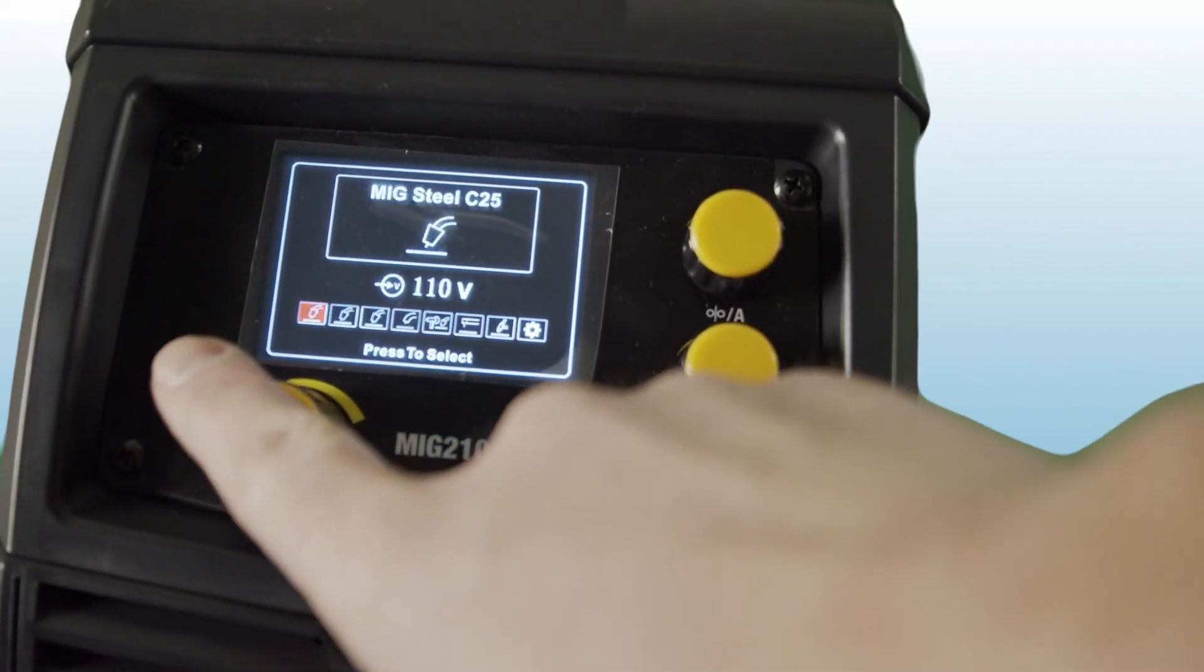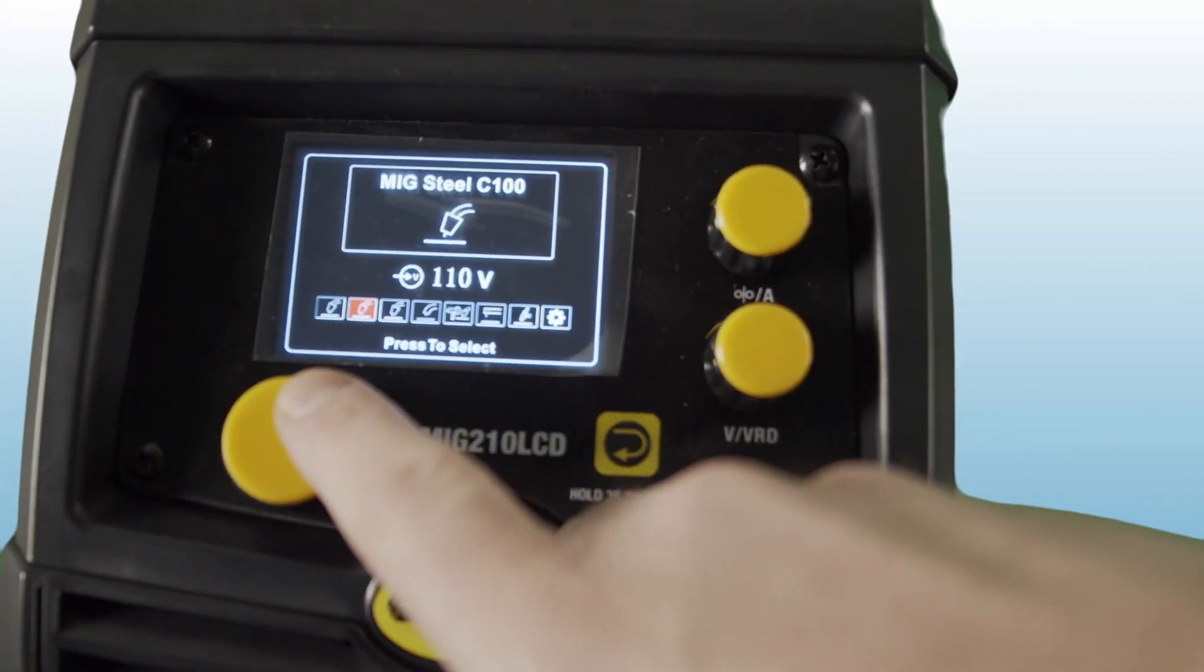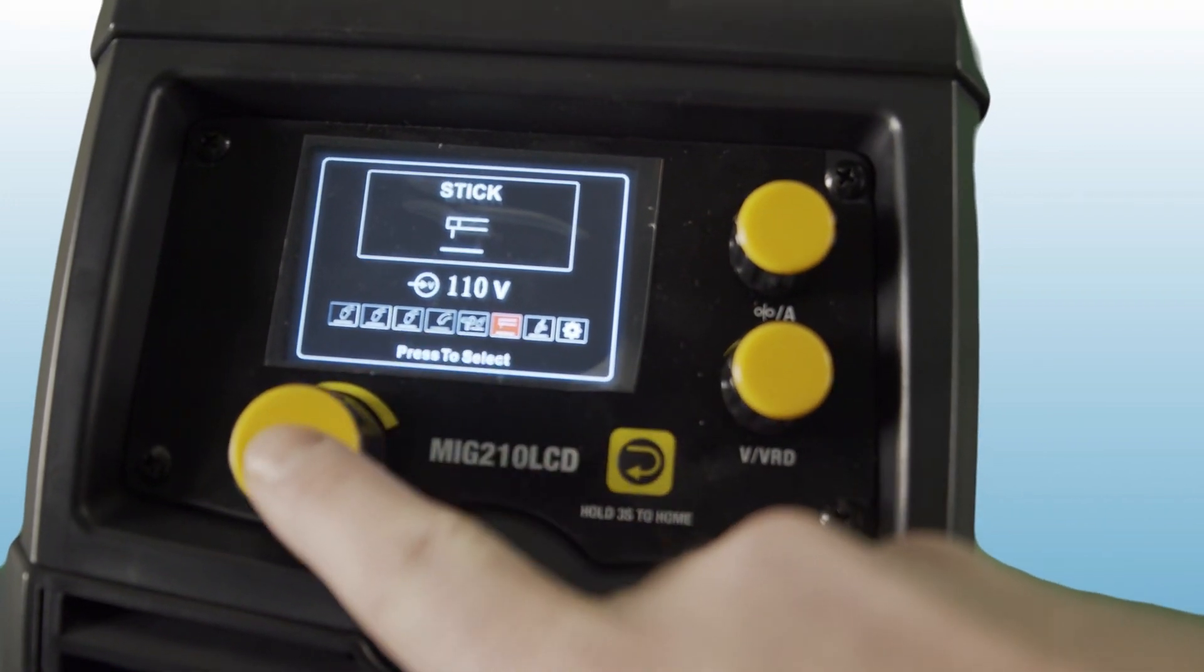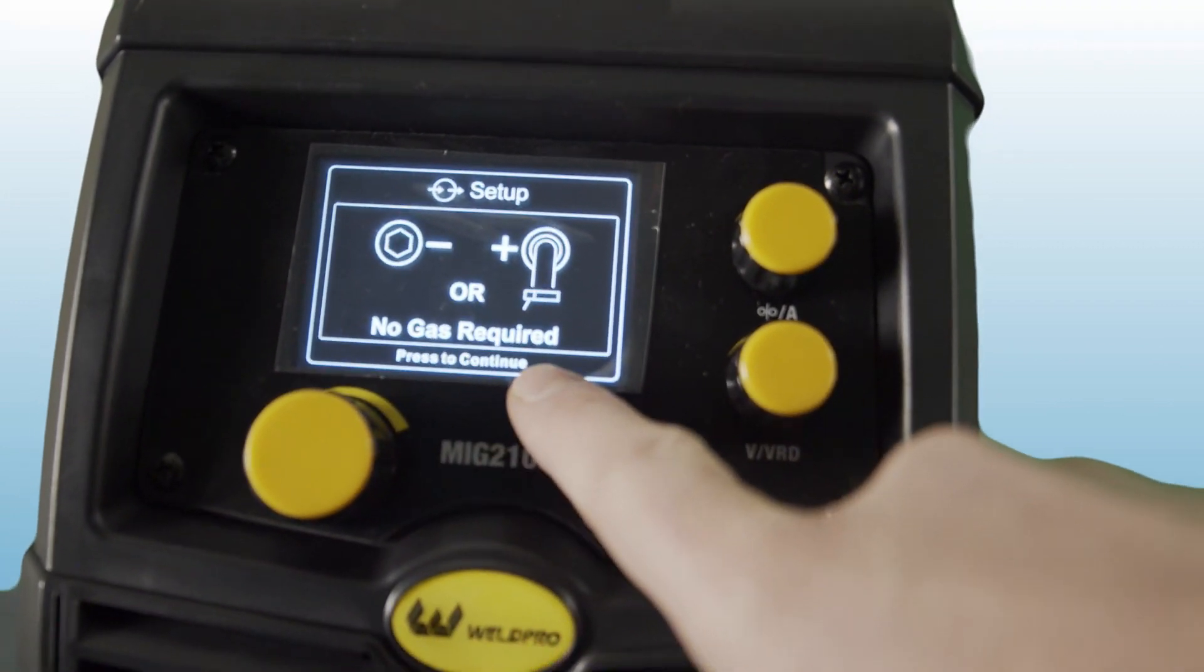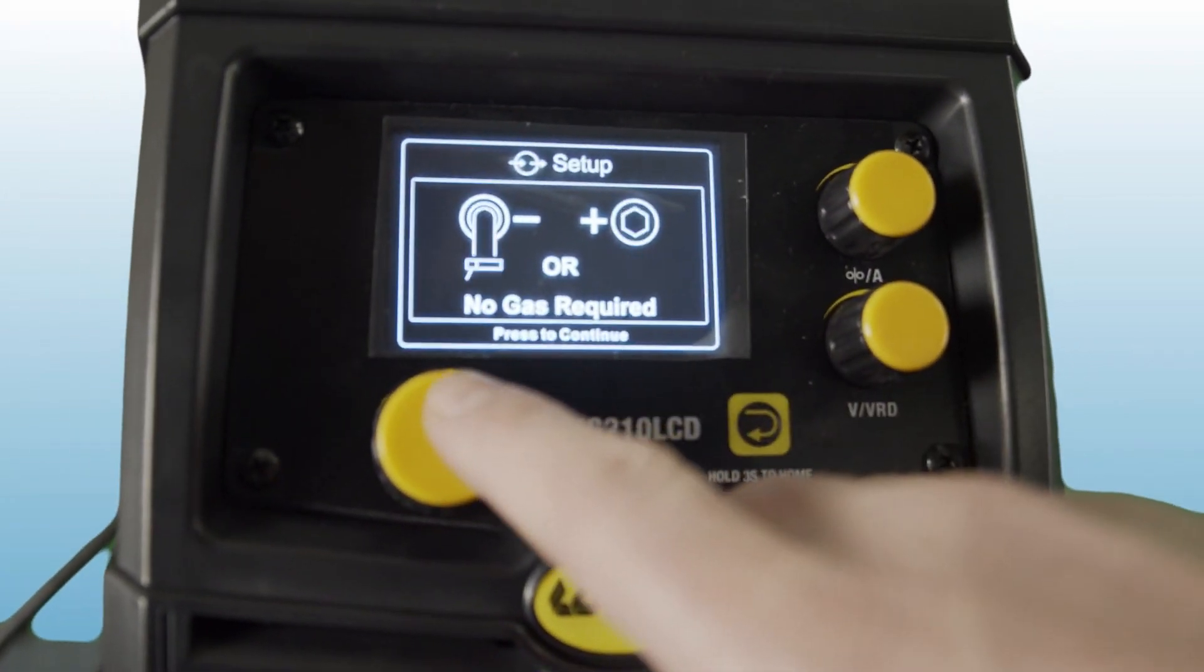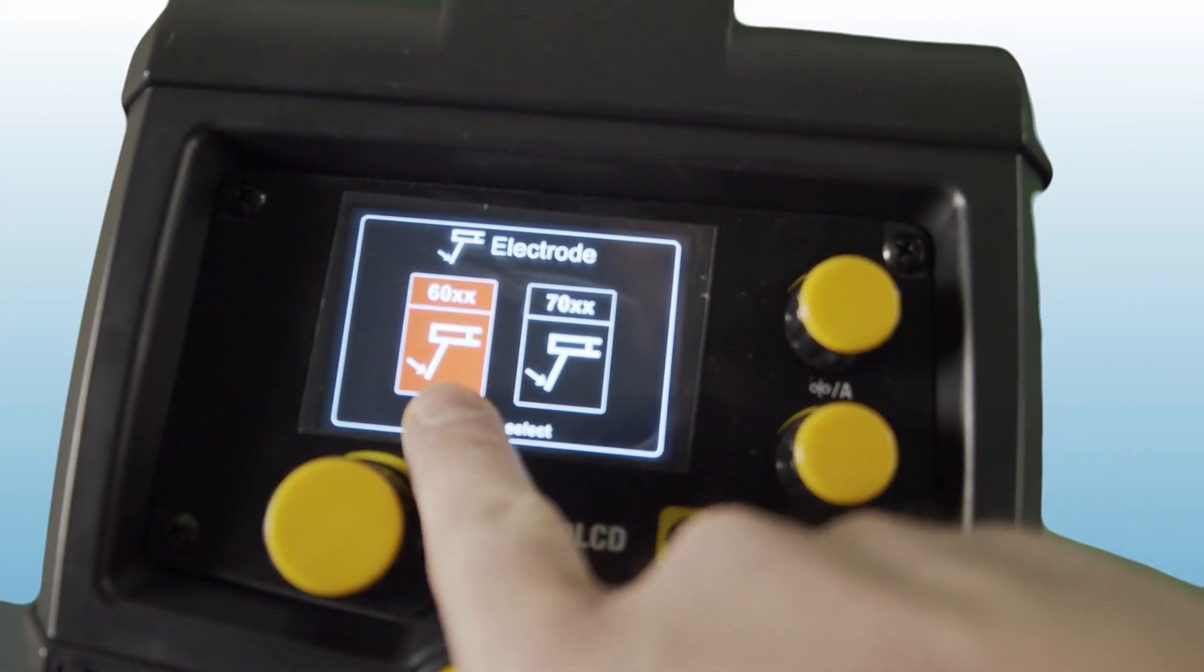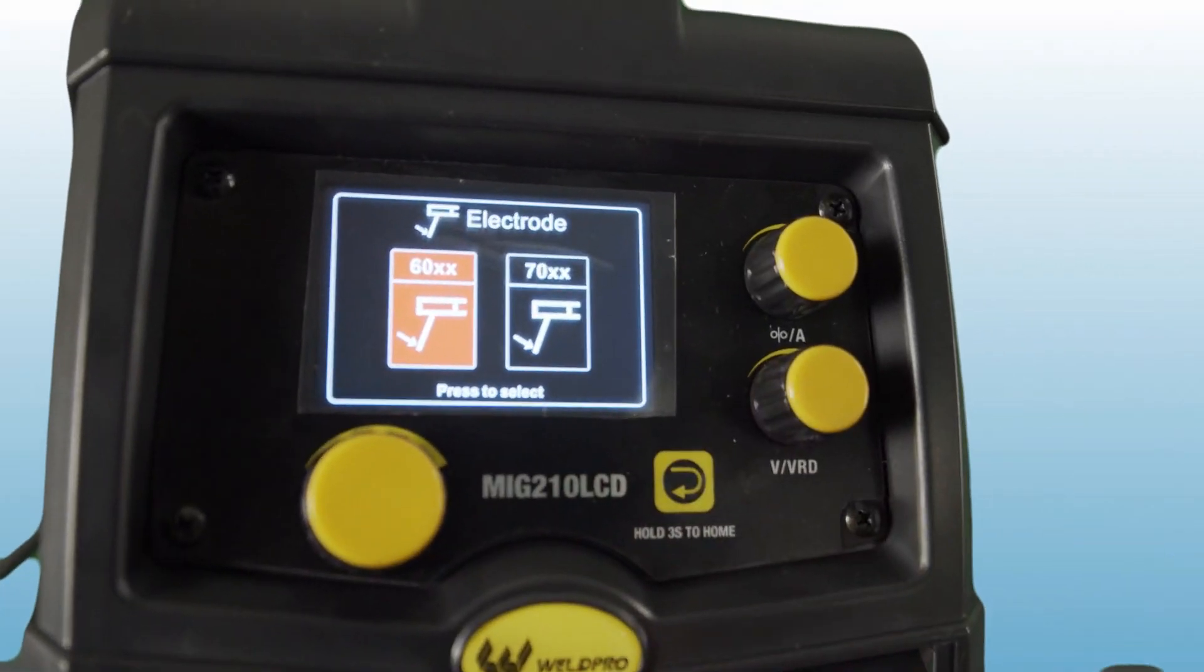With the machine on its main screen it's going to prompt you to select a welding process. The default process is the MIG steel C25. We're going to go ahead and use the selector dial rotate it clockwise and change our process to stick. The next screen says that no gas is required. This is just a reminder that when you're stick welding you don't need any shielding gas. Again we press the selector wheel to continue and the machine prompts us for an electrode choice whether it be a 60 or 70 series electrode. If you're going to be using a 60 series electrode like a 6011 select that.